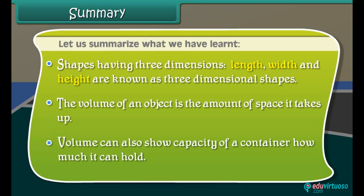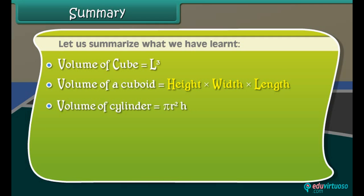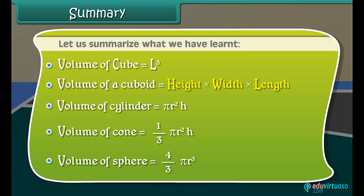Volume of cube is equal to L cubed. Volume of a cuboid is equal to height times width times length. Volume of cylinder is equal to pi r squared H. Volume of cone is equal to one over three pi r squared H. Volume of sphere is equal to four over three pi r cubed.